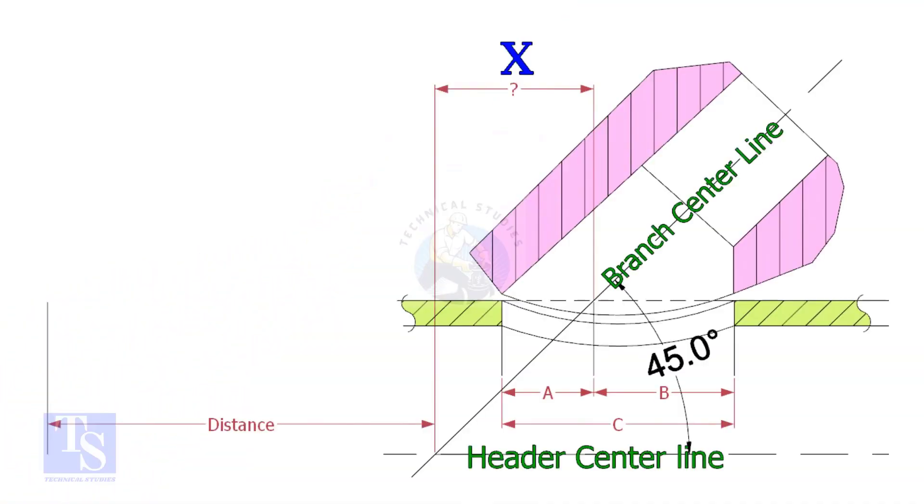Most commonly, laterolettes are used for 45 degree branch connections. In a drawing, the distance to the center of a laterolette is given from a certain point. This distance is actually on the center of the header pipe.